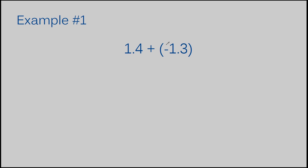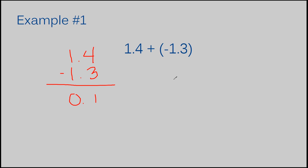The absolute value rule says you need to find the absolute value of both numbers, which is basically the positive form of the number — the number without a negative sign. This one's already positive, so the absolute value is 1 and 4 tenths. This one is negative, but we just take the negative sign off and it's 1 and 3 tenths. Next, when the signs of the two numbers are different, you need to subtract, putting the number with the largest absolute value on top. So 1 and 4 tenths goes on top. After subtracting, I get 1 tenths.